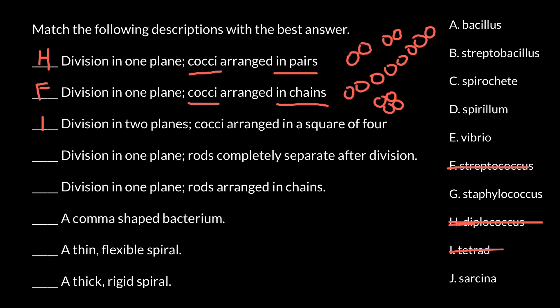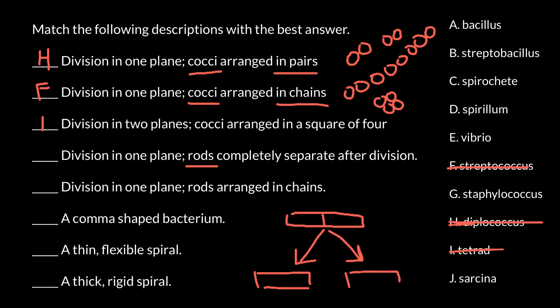Next: division in one plane, rods completely separate after division. Rods have another meaning, which is bacillus — rods and bacillus are synonyms. Imagine we have a bacillus and it produces two cells; the mother cell produces two separate cells. So we would have two separate bacilli. This is answer A.